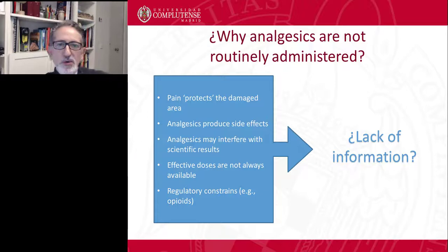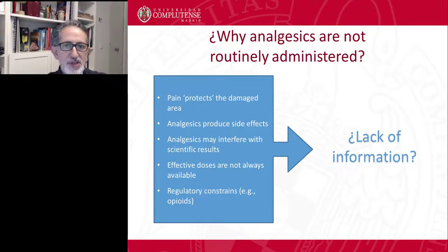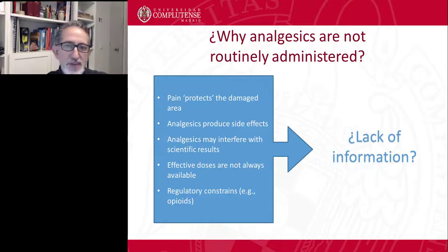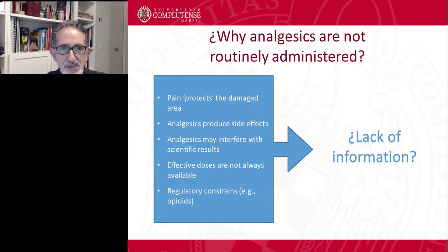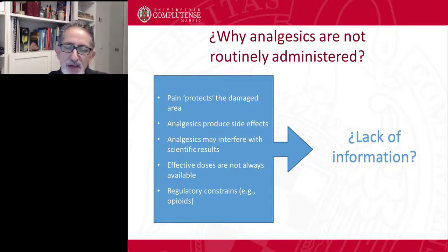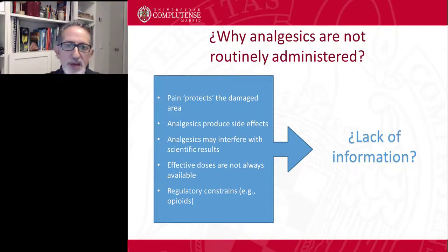Why are analgesics not routinely administered to animals? There are several reasons. Researchers may think that pain protects the damaged area, that analgesics may produce side effects, or that they may interfere with scientific results. Also, because we still don't know the most effective doses for specific species — for example, rodents compared to dogs and cats, where there are more studies identifying the best doses. And finally, because there might be regulatory constraints, such as limitations on the use of potent opiates under legal control.